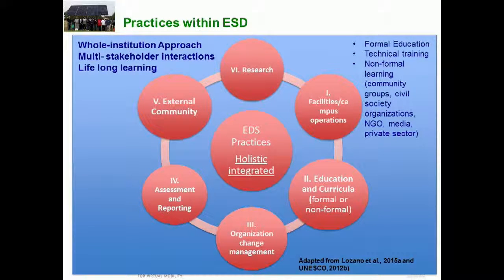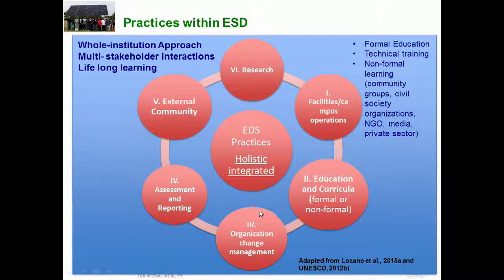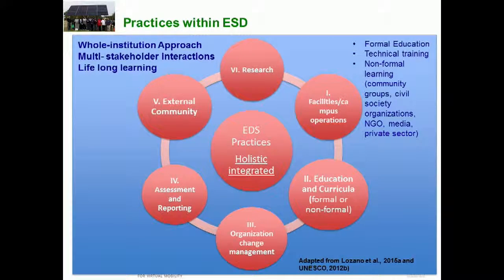Basically there are seven types of practices within education for sustainable development, as I show in this slide, and those practices could be applied alone or integrated in a holistic way. These types of practices are, for example, applying education for sustainable development at the facilities of the campus and operations.